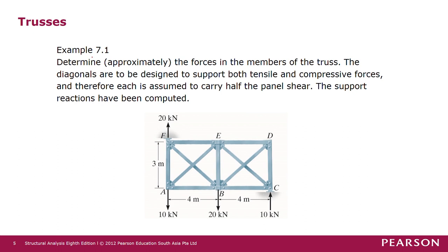Let us look at this example from your textbook. The question is to determine approximately the forces in the members of the truss. The diagonals are designed to support both tensile and compressive forces and therefore each is assumed to carry half the panel shear. The support reactions have been computed: 20 kN upward at the pin support, and 10 kN upward at support C. This truss is subjected to a 10 kN force downward at joint A and a 20 kN downward force at joint B.